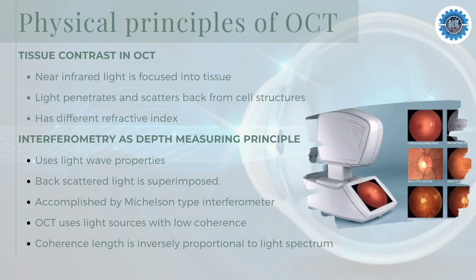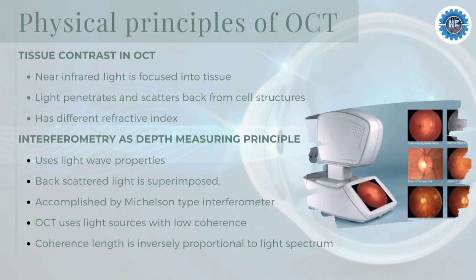The second principle is Interferometry as the depth-measuring principle of OCT. Optical Coherence Tomography utilizes the wave properties of light for depth measurement, namely the interference caused by superposition of the electrical field amplitude. The back-scattered light is superimposed with a reference beam, usually accomplished by an interferometer setup such as the Michelson-type interferometer. The superimposed beams show interference if the light of the two beams is coherent, which depends on a fixed phase difference of the waves in the two arms of the interferometer.